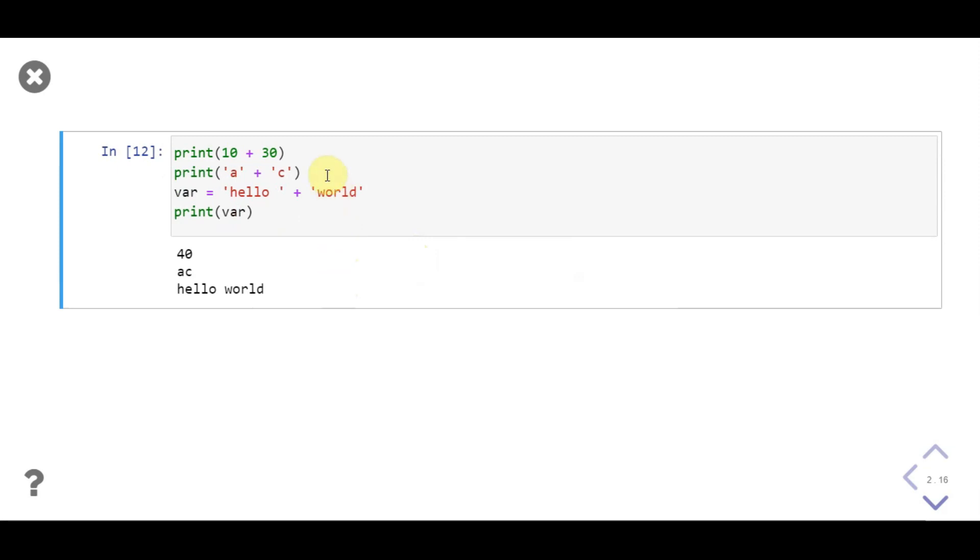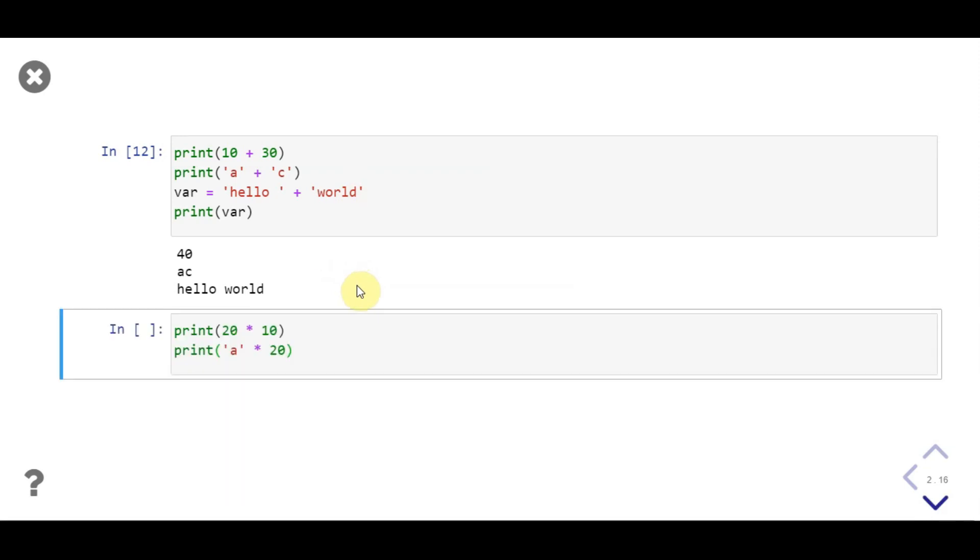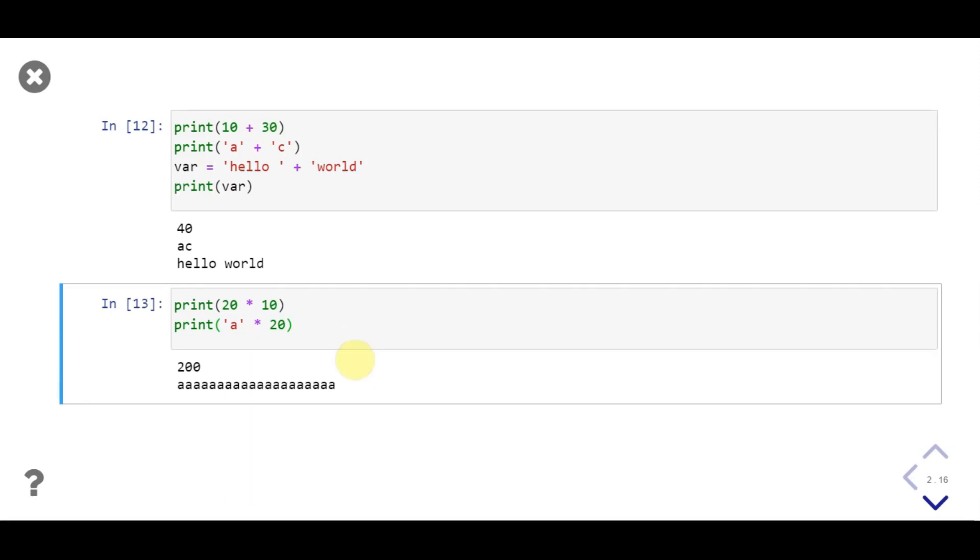Now let's multiply two integers. First we multiply 20 with 10, then we multiply string 'a' with integer 20 and see what we get. First we get 200 as an output, which was what we expected.